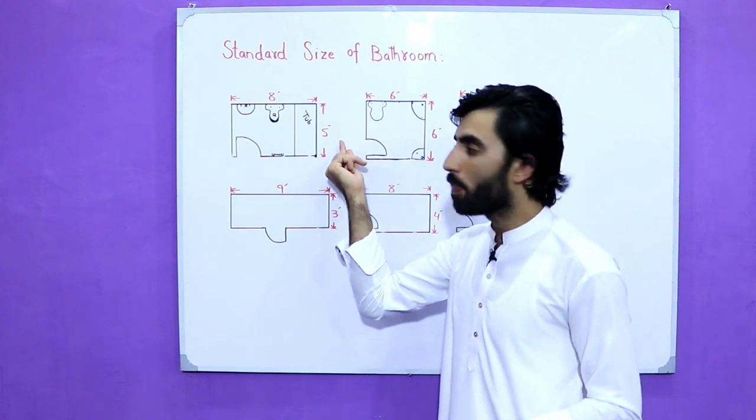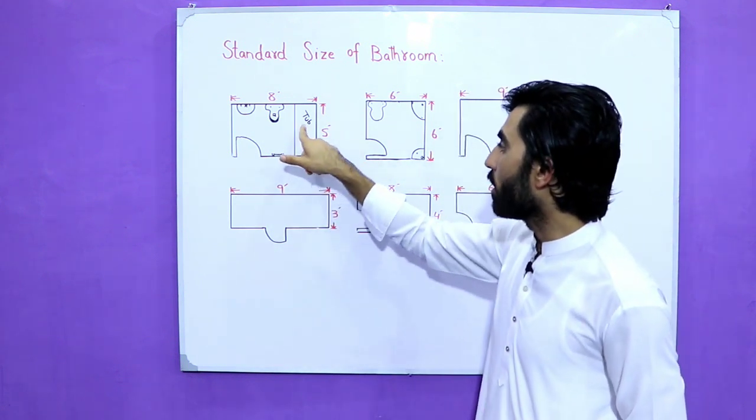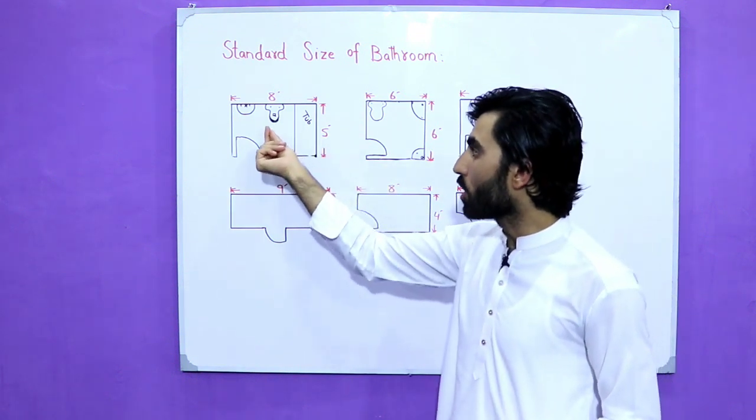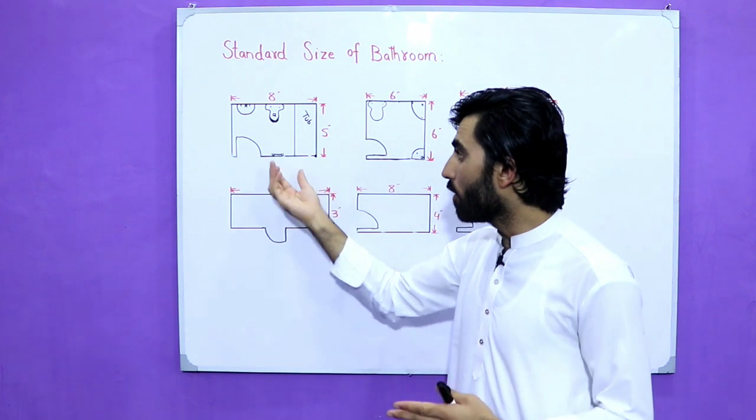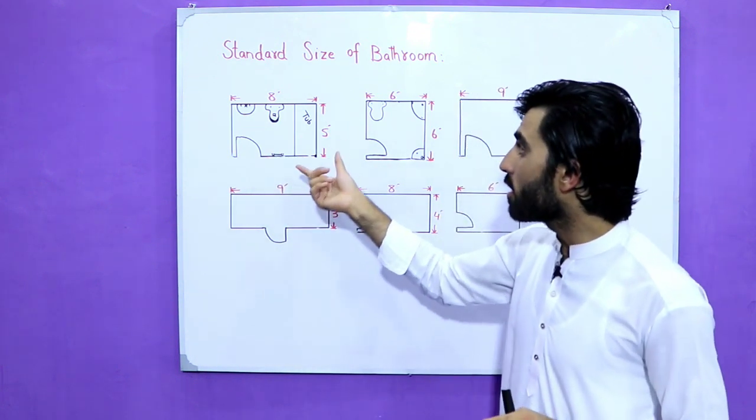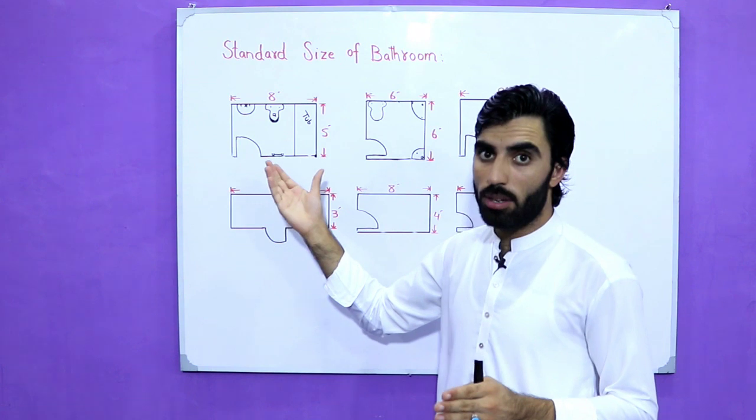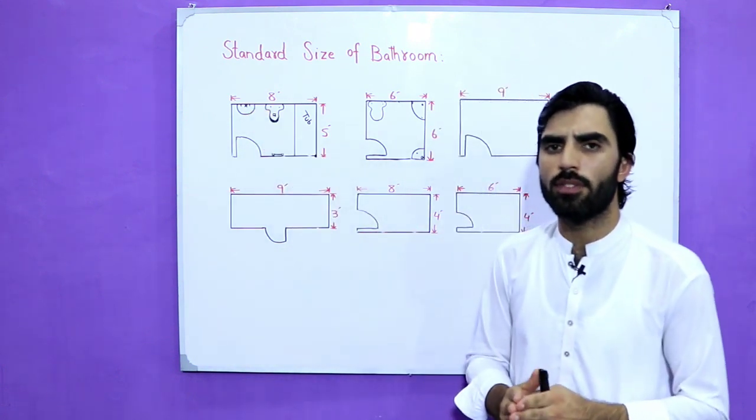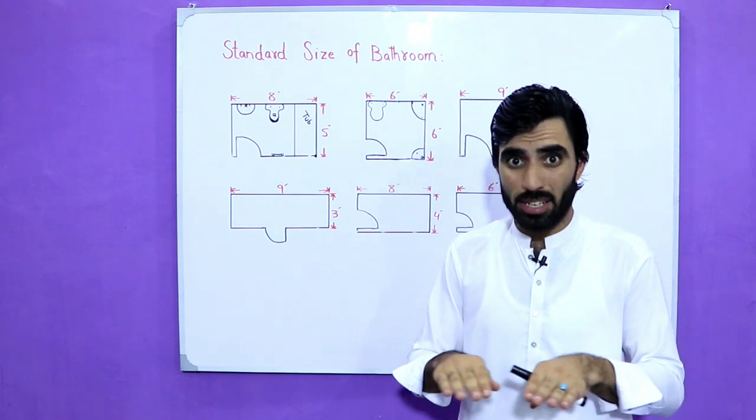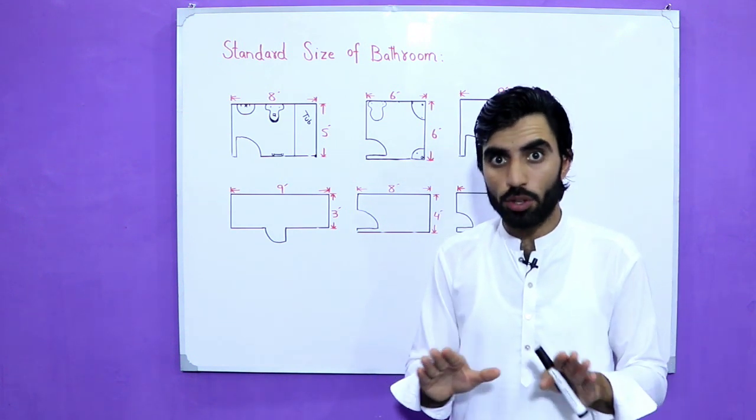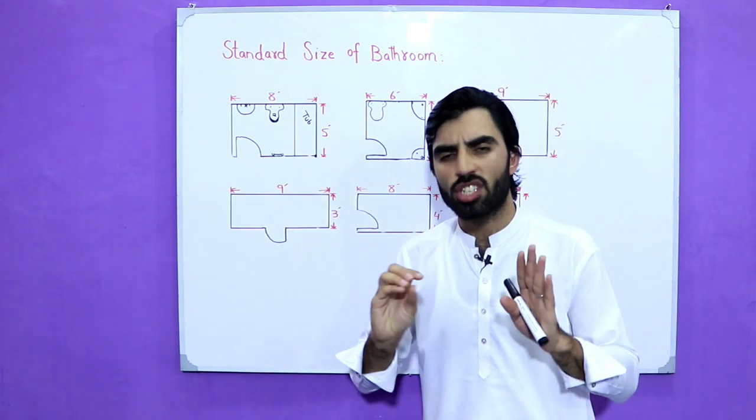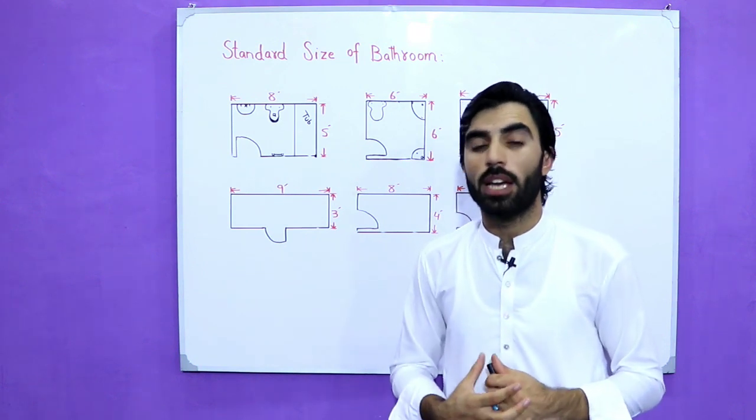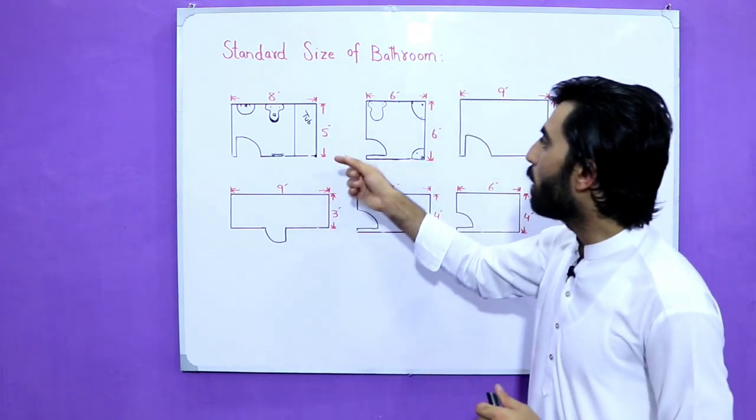Let's start. The first one is 8 by 5 feet. In 8 by 5 feet you can see here is the bathtub, also here is a water closet, and all the facilities are present here. This is a usable bath. I recommend you if you have place and if the area of the plot is okay for you, then 5 by 8 feet is the standard and good size of the bath which can help you in the future.